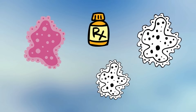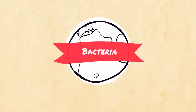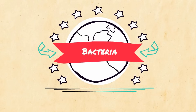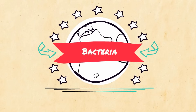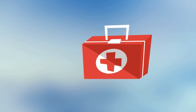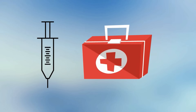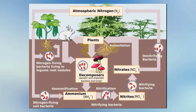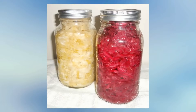Bacteria are also found almost everywhere. Bacteria are very important to life on Earth. Although some cause disease, most are very helpful to us. They break down food in our stomach, help the nitrogen cycle, and even help make some of our food, like sauerkraut. We could not survive without bacteria.